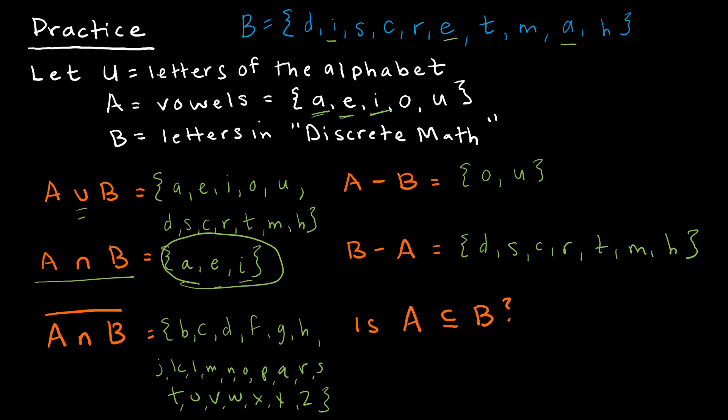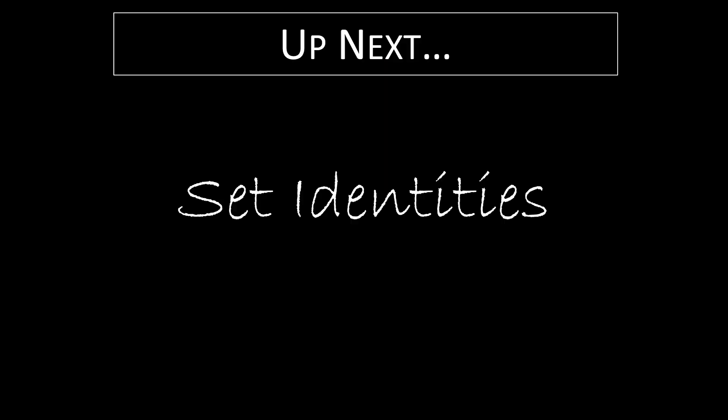And last question, is A a subset of B? That is to say, do all of these values belong in B? And it doesn't matter if B has extras, but this is obviously, or hopefully obviously, a no. Because we already determined previously that O and U are not contained in discrete math. So therefore, no, A is not a subset of B. Up next, we're going to take a look at set identities.